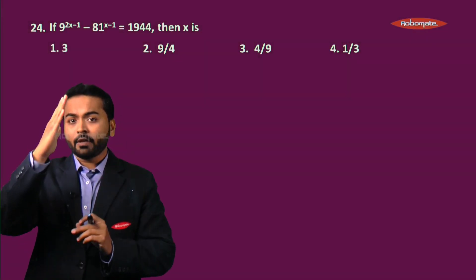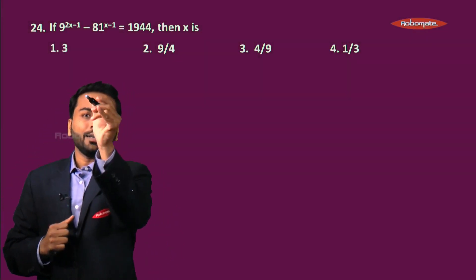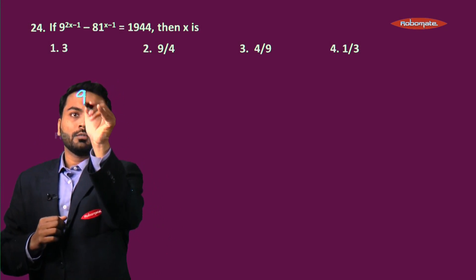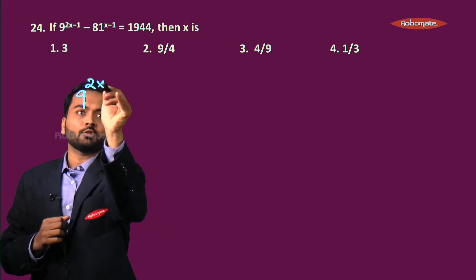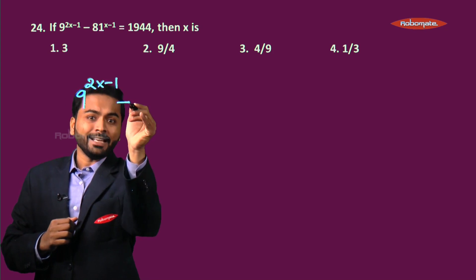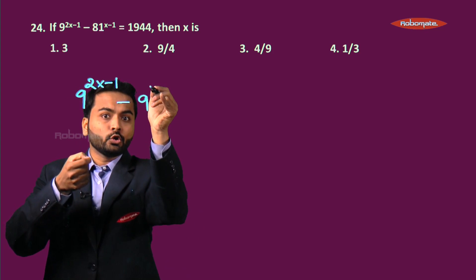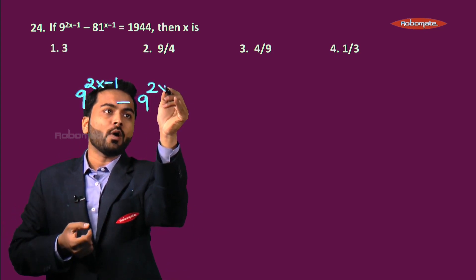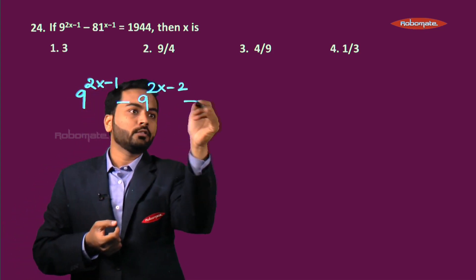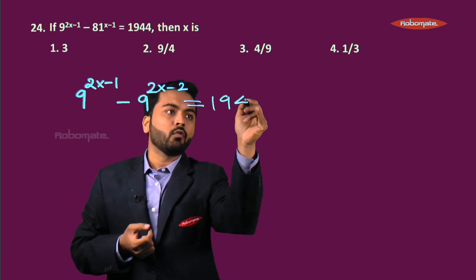Let's see how we can simplify this equation and get the value of x. Let us rewrite this equation: 9 raised to 2x minus 1. The second term, can I say 81 is 9 squared? So it can be written as 9 raised to 2 into x minus 1, which is 2x minus 2, equals 1944.